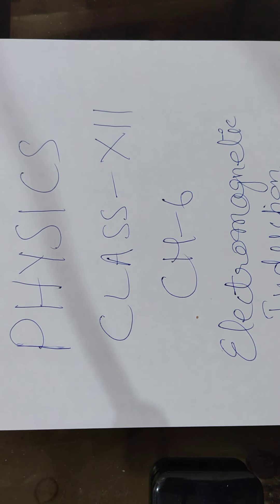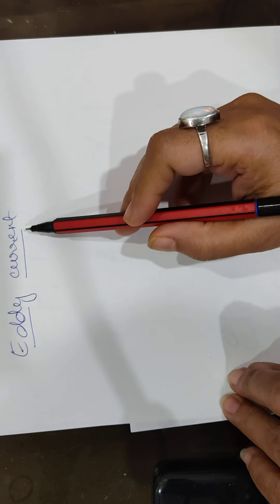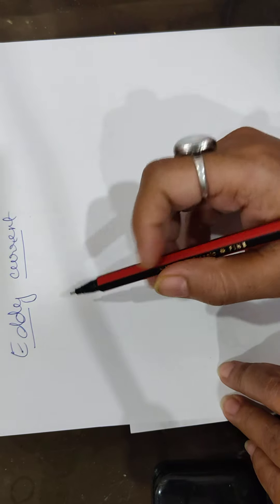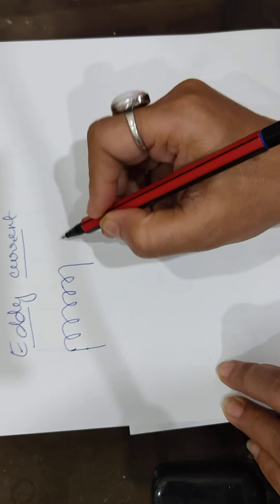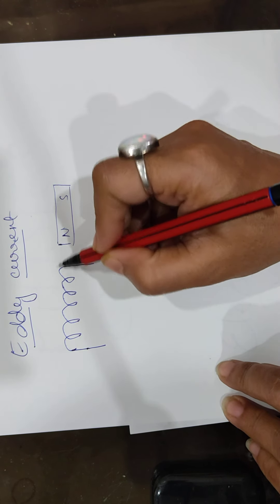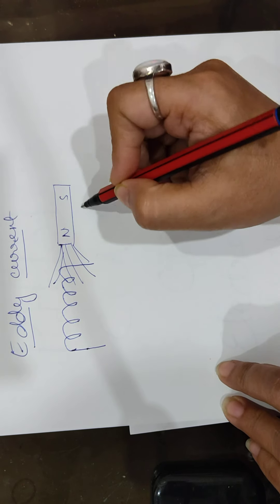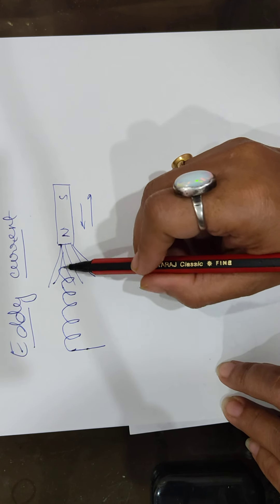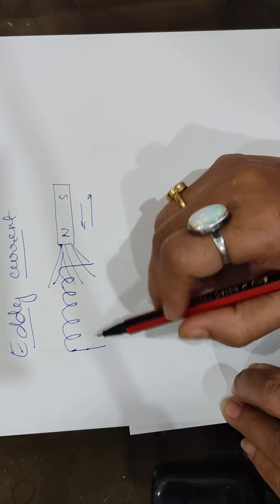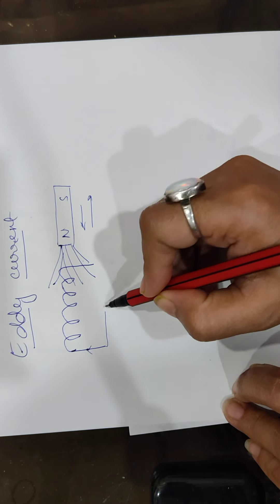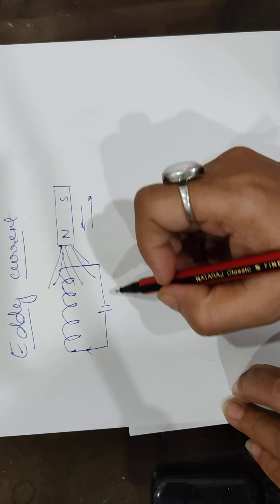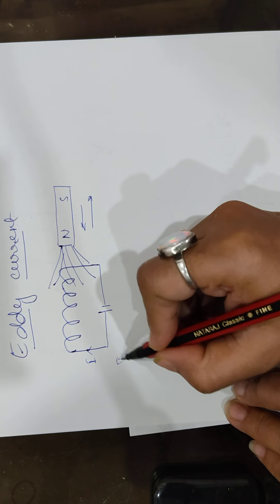Hello students, Physics Class 12 Chapter 6: Electromagnetic Induction. Today's topic is eddy currents. Before coming to eddy currents, I want to recall previous knowledge. In Faraday's law, whenever there is a coil and a magnet is placed in front of it, when the magnet is in motion, there is a change in flux, and due to that change in flux, an induced EMF is set up in the circuit, producing an induced current.